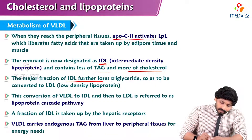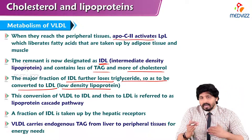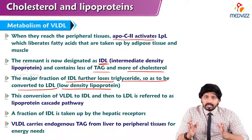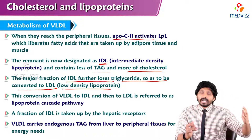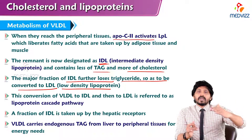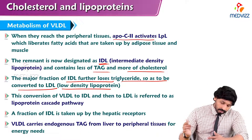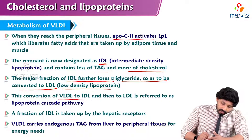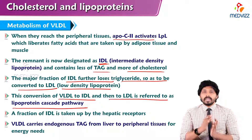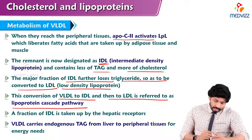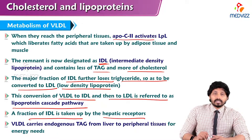The major fraction of IDL further loses triglycerides to be converted to LDL. In the interconversion between VLDL and LDL, there is a formation of IDL. LDL is rich in cholesterol; VLDL is rich in triglycerides. After losing triglycerides, VLDL converts into LDL with IDL as the intermediate — this is referred to as the lipoprotein cascade pathway: VLDL to IDL and then IDL to LDL. A fraction of IDL is taken up by hepatic receptors.